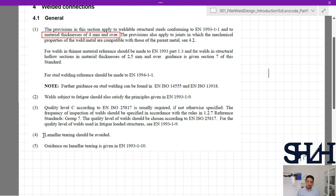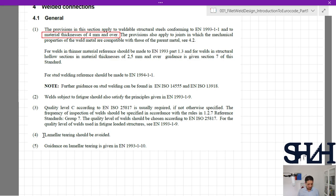Also, we need to prevent lamellar tearing—it's a kind of tearing from the bottom root of the fillet weld. You can Google it and find out how it looks like. In Class 4.3.2, fillet welds are explained. In the first item, it is general explanation: fillet welds may be used for connecting parts where the fusion faces form an angle of between 60 and 120 degrees.